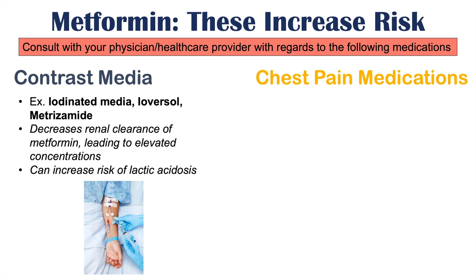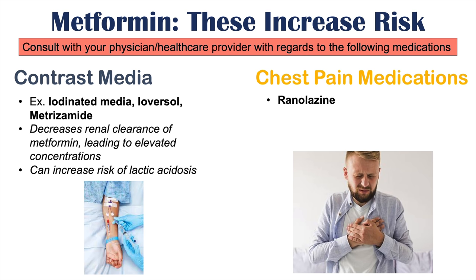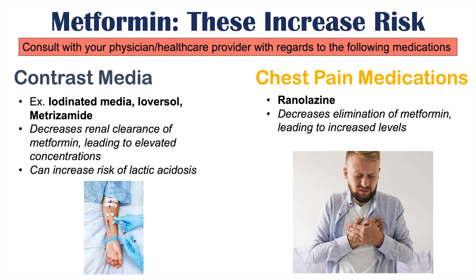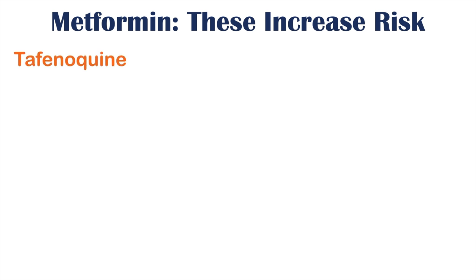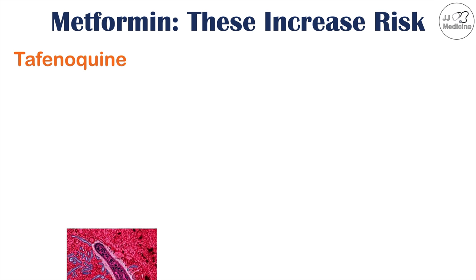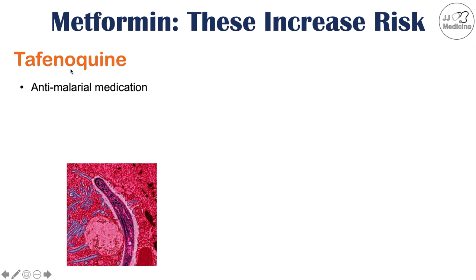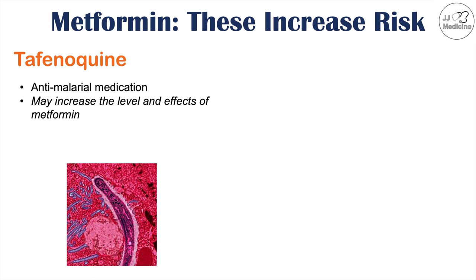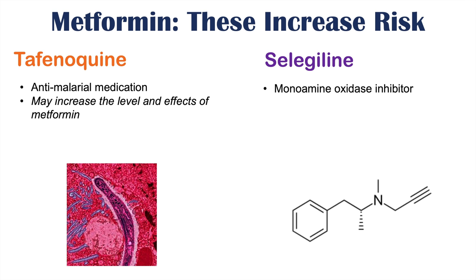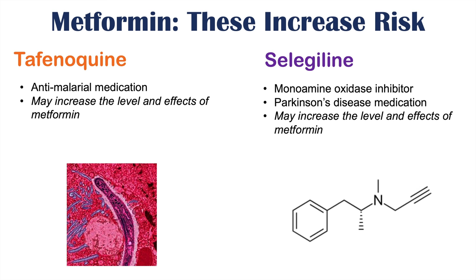Certain chest pain medications can also interact with metformin, including ranolazine, which decreases the elimination of metformin leading to increased metformin levels. Antimalarial medications such as tafenoquine can increase the level and effects of metformin. Selegiline, a monoamine oxidase inhibitor used for Parkinson's disease, can also increase the level and effects of metformin.